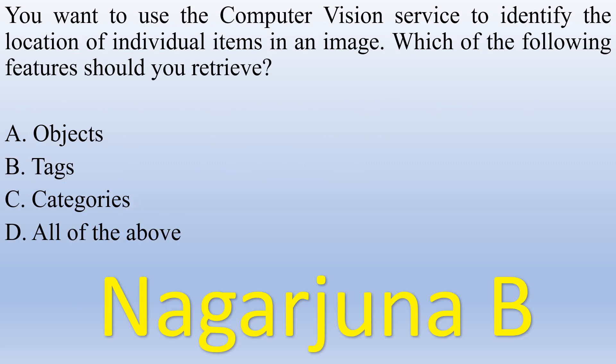You want to use the Computer Vision service to identify the location of individual items in an image. Which of the following features should you use? Options: Objects, Tags, Categories, All of the above. The right answer is Objects.